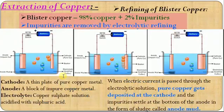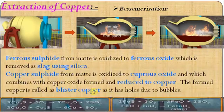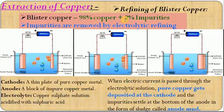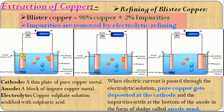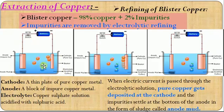The blister copper has impurities — about 98% copper and 2% impurities. We have to remove this 2% impurity to get 100% pure copper. This process is carried out electrolytically and is called electrolytic refining. This is the last process in copper extraction.